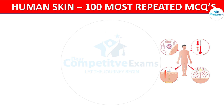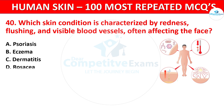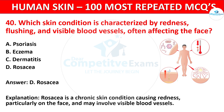Question 40. Which skin condition is characterized by redness, flushing, and visible blood vessels, often affecting the face? Your options: Psoriasis, Eczema, Dermatitis, or Rosacea. The correct answer is Rosacea. Rosacea is a chronic skin condition causing redness particularly on the face and may involve visible blood vessels.